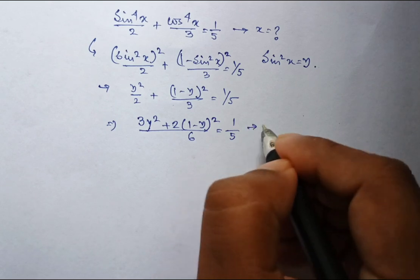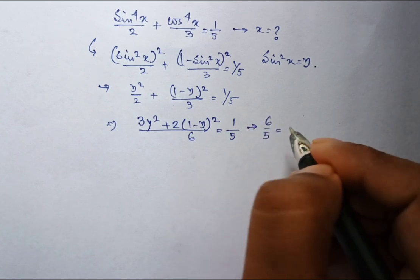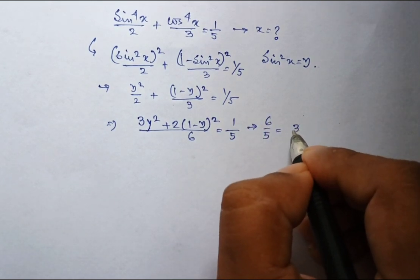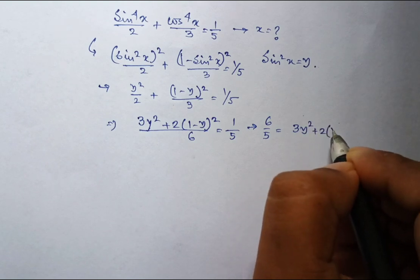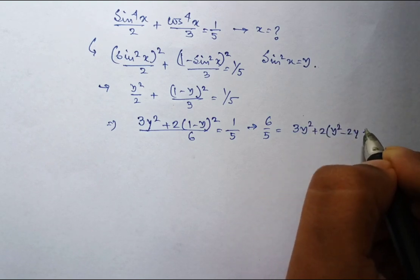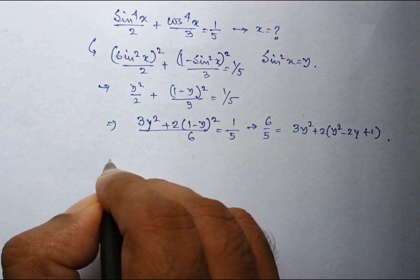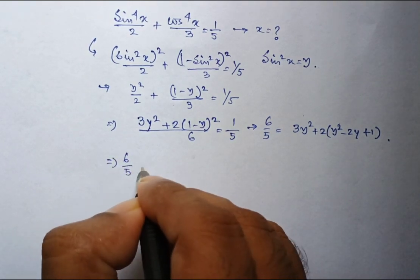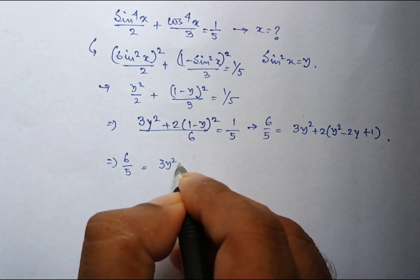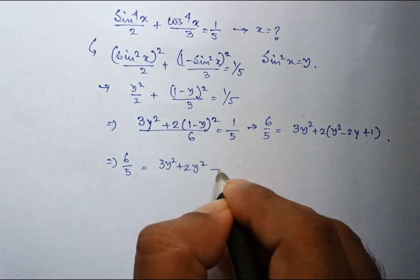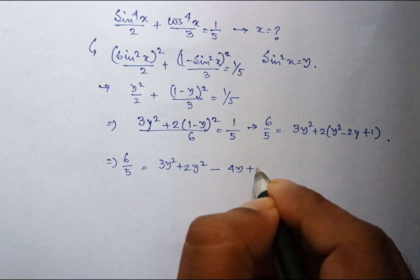That means 6 by 5 equal to 3y square plus 2 into y square minus 2y plus 1. If we further simplify we can get 6 by 5 equal to 3y square plus 2y square minus 4y plus 2.